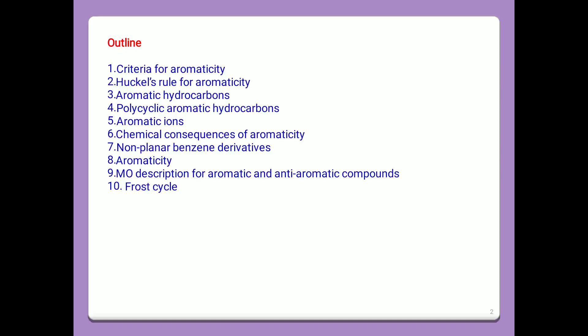The outline of this topic includes: Criteria for Aromaticity, Huckel Rule for Aromaticity, Aromatic Hydrocarbons, Polycyclic Aromatic Hydrocarbons, Aromatic Ions, Chemical Consequence of Aromaticity, Nonplanar Benzene Derivatives, Aromaticity, Molecular Orbital Description for Aromatic and Anti-Aromatic Compounds, and also Post-Cycle.